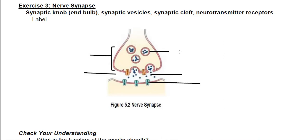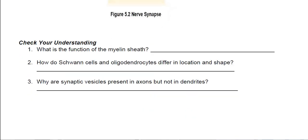Located in the synaptic knob are these bubbles — technically called synaptic vesicles. Those vesicles contain a neurotransmitter. When the vesicles merge with the plasma membrane of the axon, they release the neurotransmitter into the synaptic cleft, which is the actual empty space between the axon and the dendrite — they don't actually touch each other. The neurotransmitter diffuses across the synaptic cleft and is received by the receptor on the dendrite.